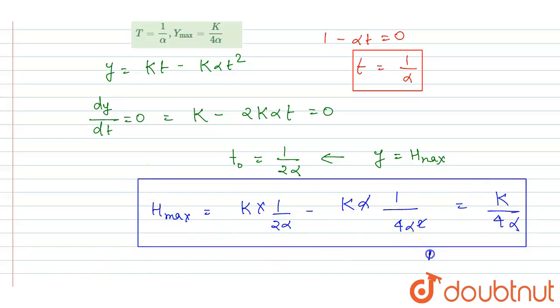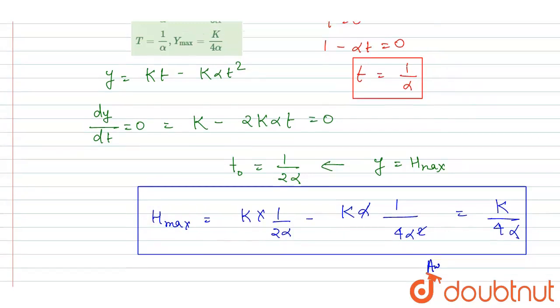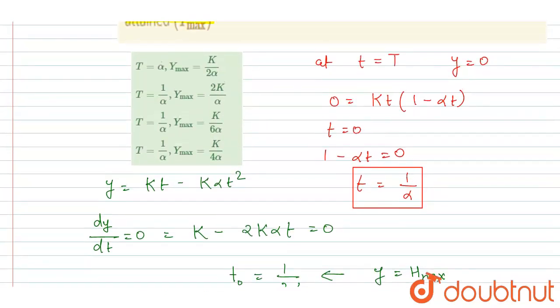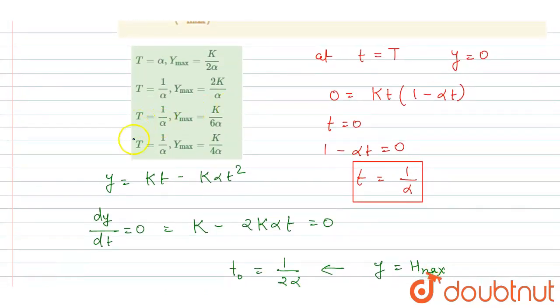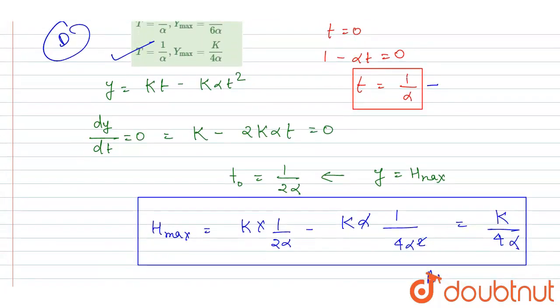So this will be the answer for the maximum height and this will be the time of flight. Check for the option: k/(4α), 1/α. So D here will be the correct option. If you see, we got the time of flight equals 1/α and maximum height is k/(4α). Simple.